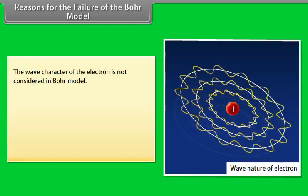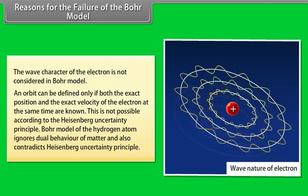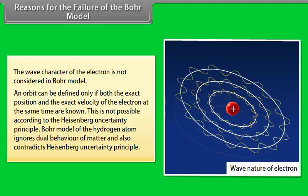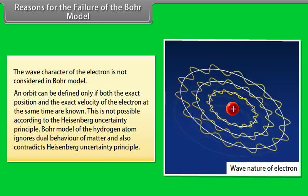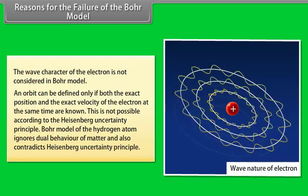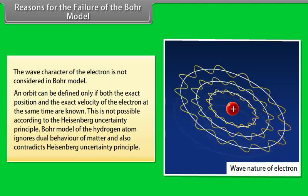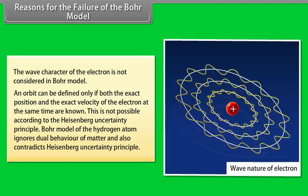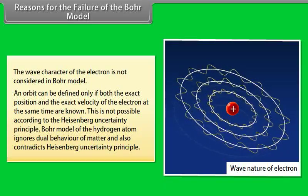Reasons for the failure of the Bohr model: The wave character of the electron is not considered in the Bohr model. The orbit can be defined only if both the exact position and the exact velocity of the electron at the same time are known, which is not possible according to the Heisenberg Uncertainty Principle. Bohr's model of the hydrogen atom ignores the dual behavior of matter and also contradicts the Heisenberg Uncertainty Principle.